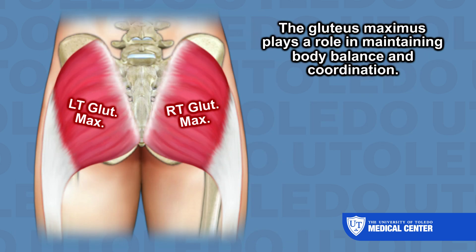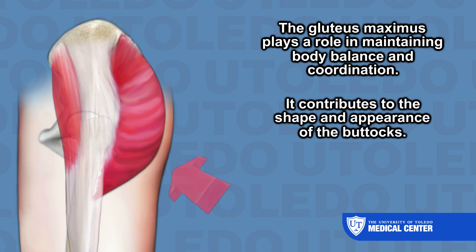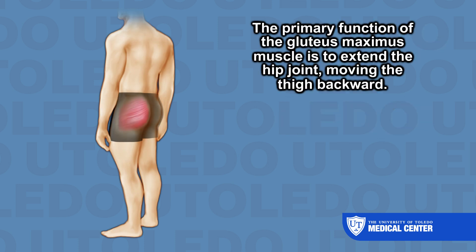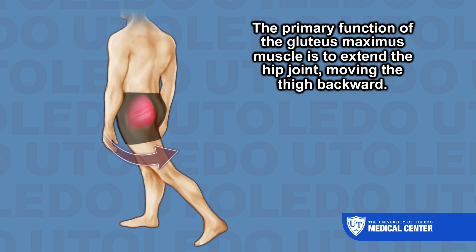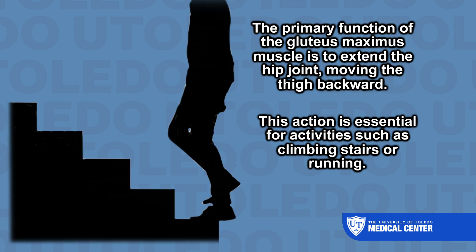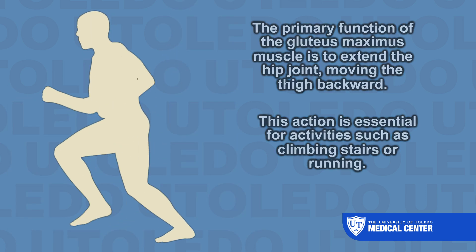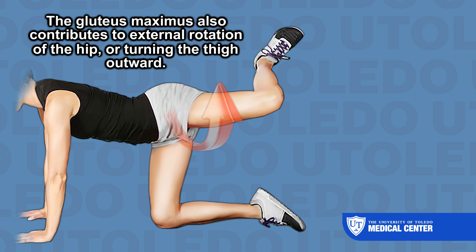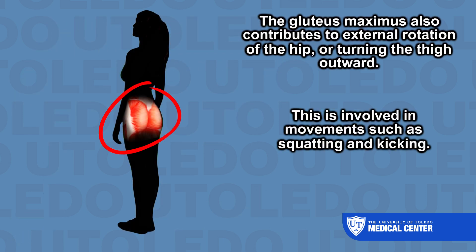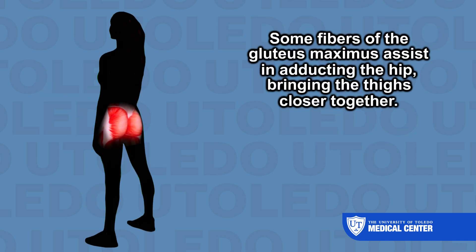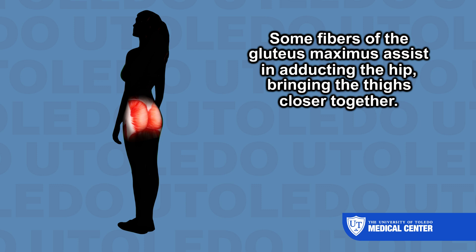The gluteus maximus plays a role in maintaining body balance and coordination, and contributes to the shape and appearance of the buttocks. The primary function of the gluteus maximus muscle is to extend the hip joint, moving the thigh backward — an action essential for activities such as climbing stairs or running. The gluteus maximus also contributes to external rotation of the hip, turning the thigh outward, which is involved in movements such as squatting and kicking. Some fibers of the gluteus maximus assist in adducting the hip, bringing the thighs closer together.